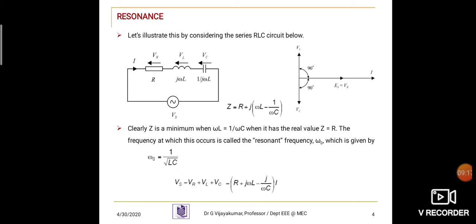Z is minimum when omegaL is equal to 1 by omegaC, and at that point the real value of Z is equal to R. So if XL equals XC, the circuit behaves like a resistive load. Even though inductive reactance is present in the line, during a particular frequency the inductor and capacitor reactances are equal, and it acts as a resistive load only. The frequency at which this occurs is called the resonance frequency, represented by omega-naught, which equals 1 by the square root of LC.